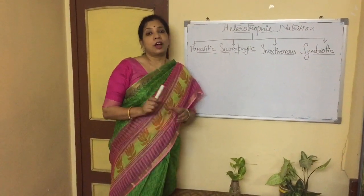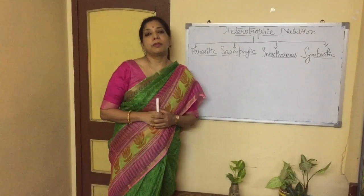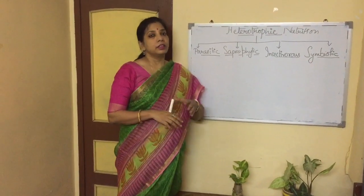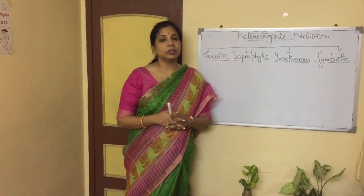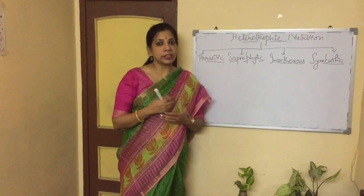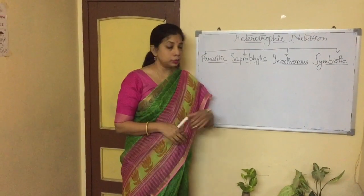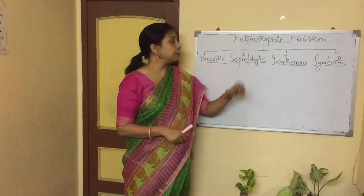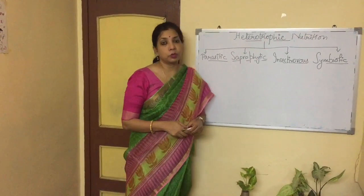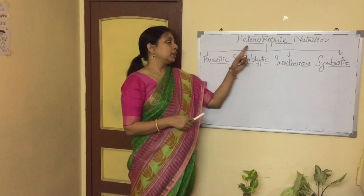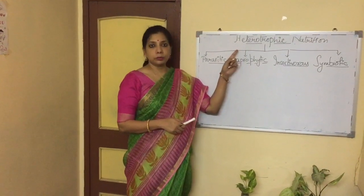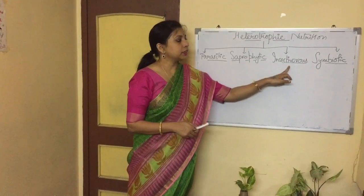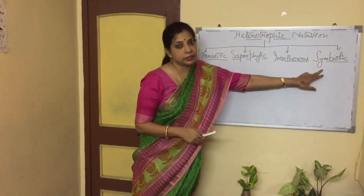After studying the autotrophic mode of nutrition in green plants, there are many plants in this world which cannot synthesize their own food. They show heterotrophic nutrition. There are four main types of heterotrophic nutrition: parasitic, saprophytic, insectivorous, and symbiotic.